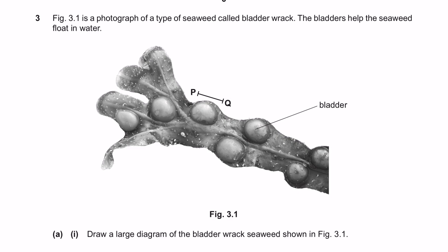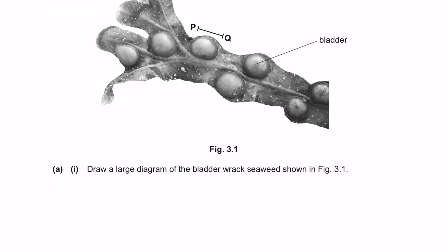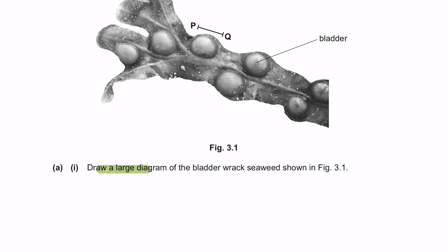Question 3. Figure 3.1 is a photograph of a type of seaweed called bladder wrack. The bladders help the seaweed to float in water. Question E, part 1. Draw a large diagram of the bladder wrack seaweed shown in figure 3.1.